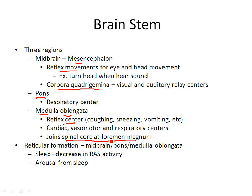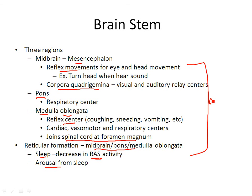The medulla oblongata is located between the pons and the foramen magnum — that big hole in the skull. There's also a generalized area called the RAS, or reticular formation, which encompasses all three parts of the brain stem. This is involved in sleep and wake arousal — it allows you to wake up from sleep. It's kind of an automatic thing, so most of the brain stem functions tend to be autonomic or automatic.